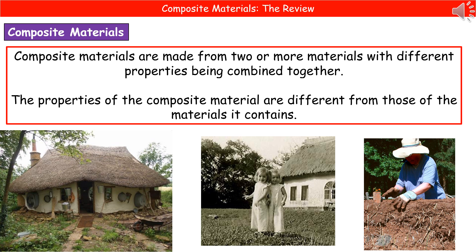Welcome to our review on composite materials. When we use the term composite materials, we're referring to something that's made from two or more materials with different properties that we've combined together. The properties of the composite material are actually different from those of the materials it contains.